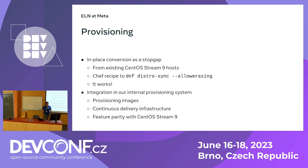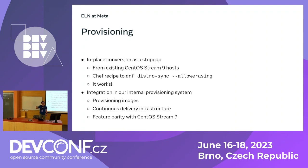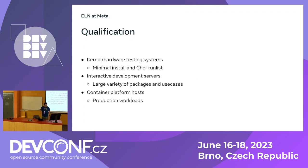The provisioning system basically just drops images onto machines, as you might expect. The images are continuously delivered and tested — the provisioning system will build the image, try to install a bunch of machines with it, and tag it as good or not good. Right now we're at the point where we're effectively in feature parity with Stream 9. We were actually able to refactor quite a bit of this logic to make it saner and better support future distributions.